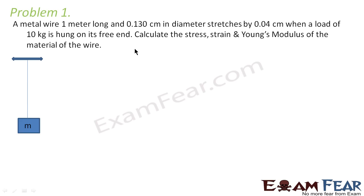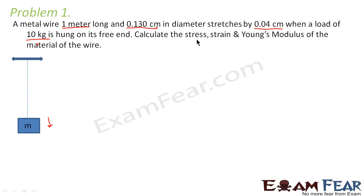The problem states: a metal wire 1 meter long and 0.130 cm in diameter stretches by 0.04 cm when a load of 10 kg is hung on its free end. This is the metal wire which is 1 meter long, with the 10 kg mass hung at its free end. When no mass was attached, the length was 1 meter; after the mass is hung, the wire extends downward, stretching by 0.04 cm.